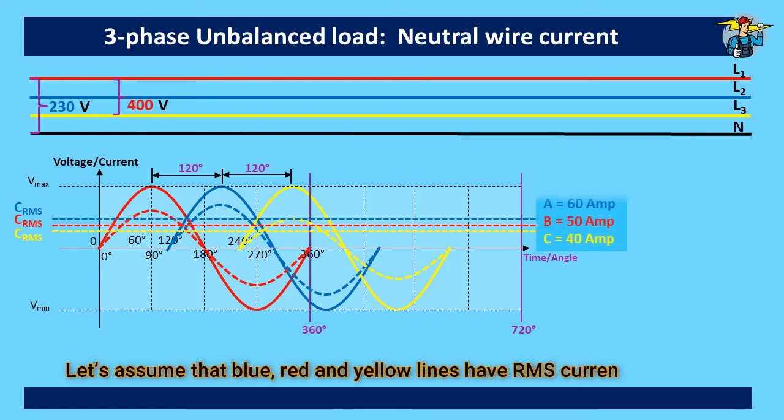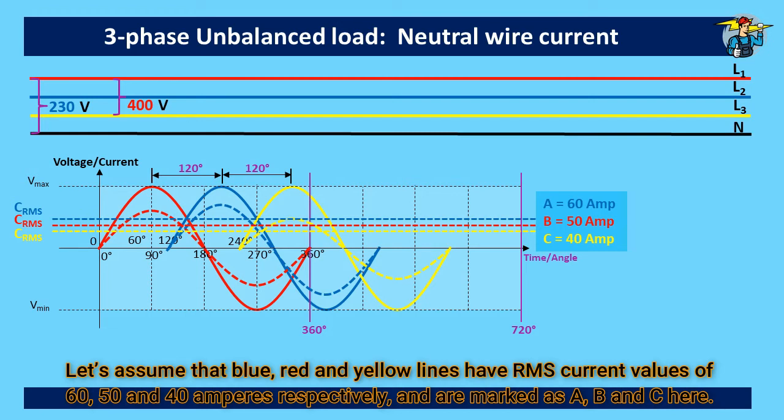Let's assume that blue, red, and yellow lines have RMS current values of 60, 50 and 40 amperes respectively, and are marked as A, B and C here.